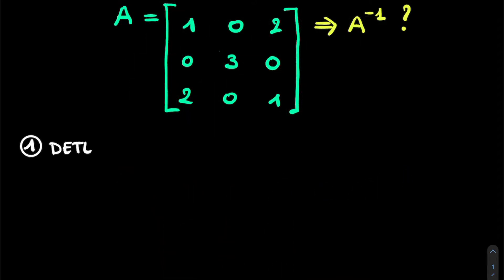So let's see how we do this step by step. First, we need to calculate the determinant of this matrix. So we can write the determinant in this notation with the vertical lines: 1, 0, 2, 0, 3, 0, 2, 0, 1 are the matrix elements.